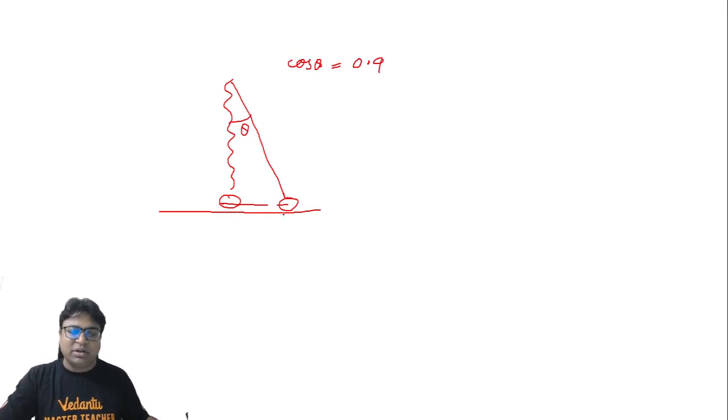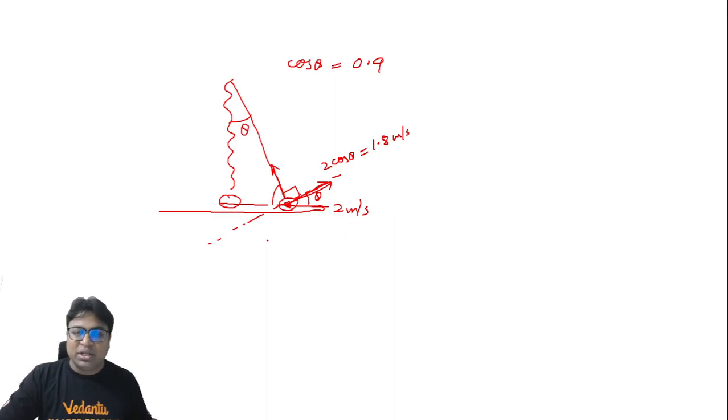At this point the bob was traveling with a speed of 2 meter per second. The moment the string becomes taut, there will be an impulse in this direction. In a direction perpendicular to the string, the momentum will remain conserved. If this angle is theta, this angle will become 90 minus theta, this angle is 90 degrees, so this angle will become theta. The velocity component in this direction that we are going to get will be 2 cos theta, so it becomes 1.8 meter per second. This will be the velocity component. Now we are in a position to answer both questions.